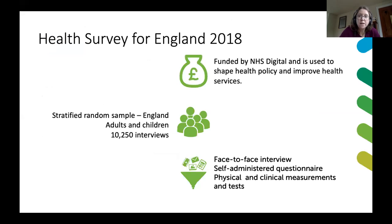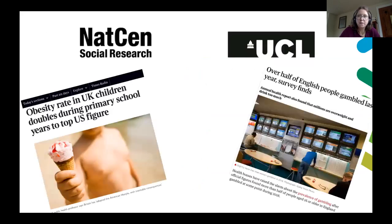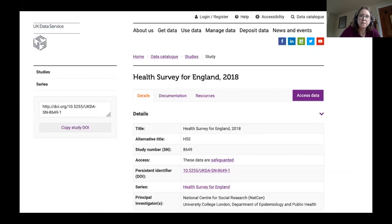Another survey is the Health Survey for England. It's funded by NHS Digital and used to shape health policy and improve health services — essentially finding out about the health of the nation. It's a slightly bigger survey than the British Social Attitudes, with 10,250 interviews covering adults and children. Again, it's administered face to face with a self-administered questionnaire, but they also do physical and clinical measurements and tests — they actually weigh people and sometimes take blood samples. This is run by NatCen, with UCL working with them to produce the survey. Things we find out include information about obesity rates, healthy living, and gambling. Each survey has its individual catalogue page on our website.